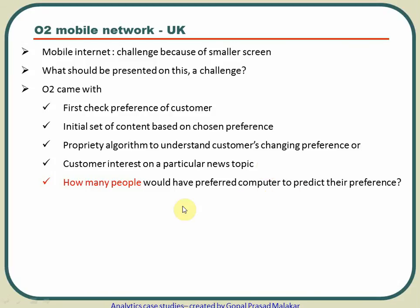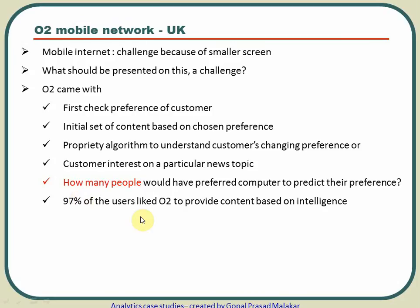You might wonder how many people would actually like a computer predicting their preferences, and you might expect many customers to dislike it. Surprisingly, 97% of O2 users liked the content being provided by the algorithm. So 97% of the time, the system was able to predict what the customer was looking for, or at least provide something acceptable to them.